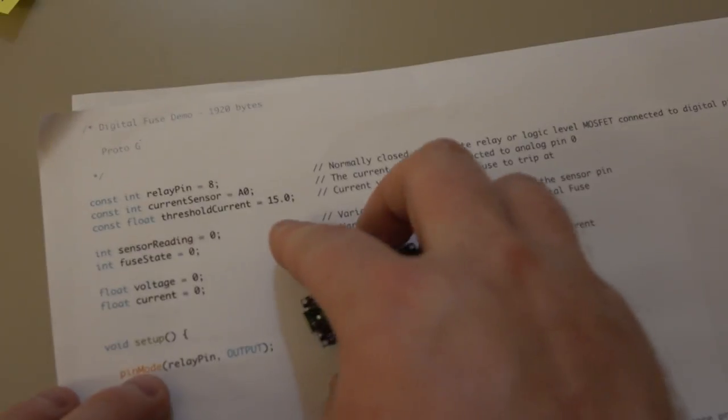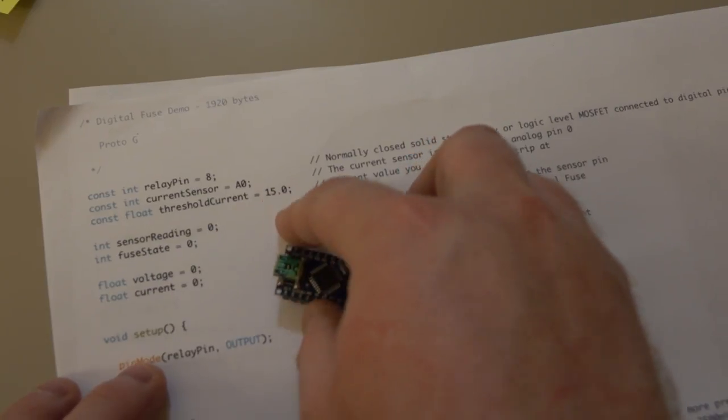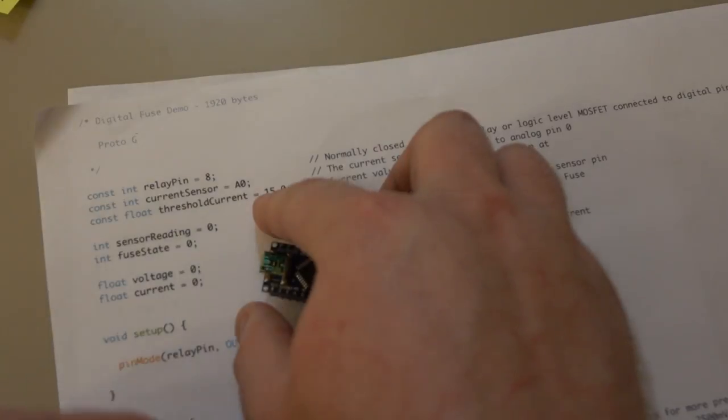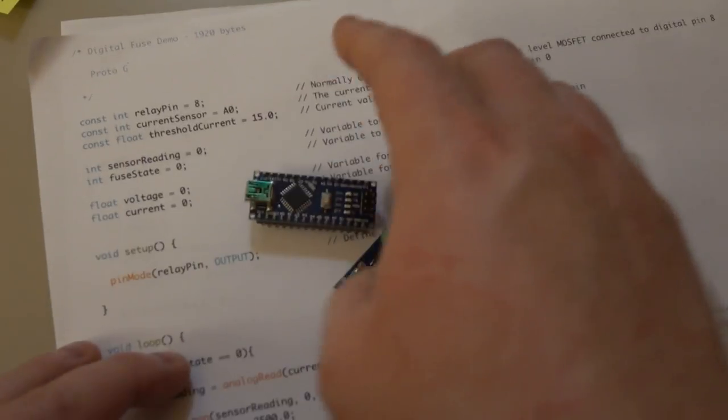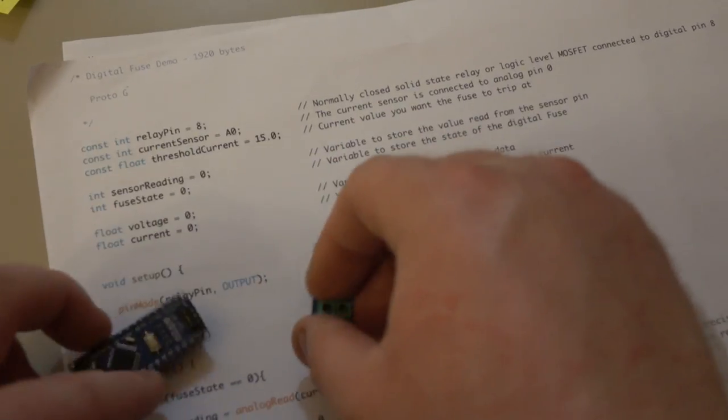So this is nice because you can easily adjust it. And let's say you had a 15 amp fuse. You could set this to 13 or something. So you could just kind of have an easy way of not blowing your actual fuses.